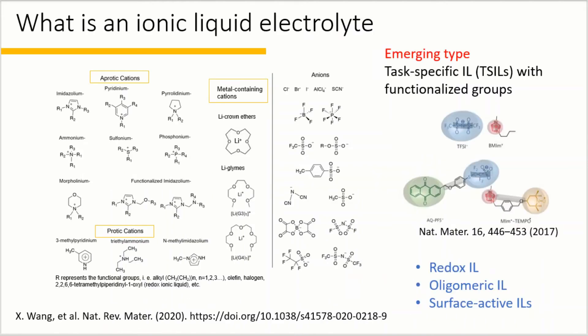Ionic liquid is composed of solvent-free positive and negative charge carriers, or cations and anions. The intrinsic properties of ionic liquid are determined by the chemical structure and electrostatic interactions of its constituent cations and anions.